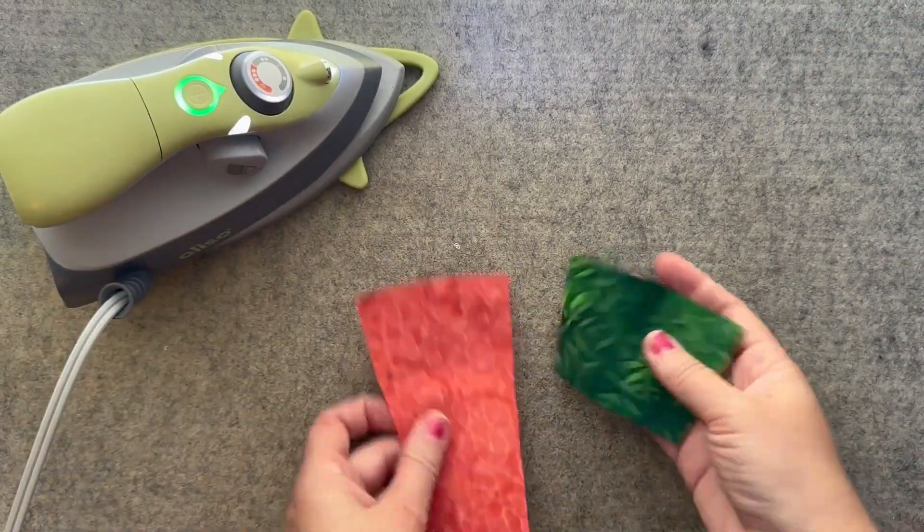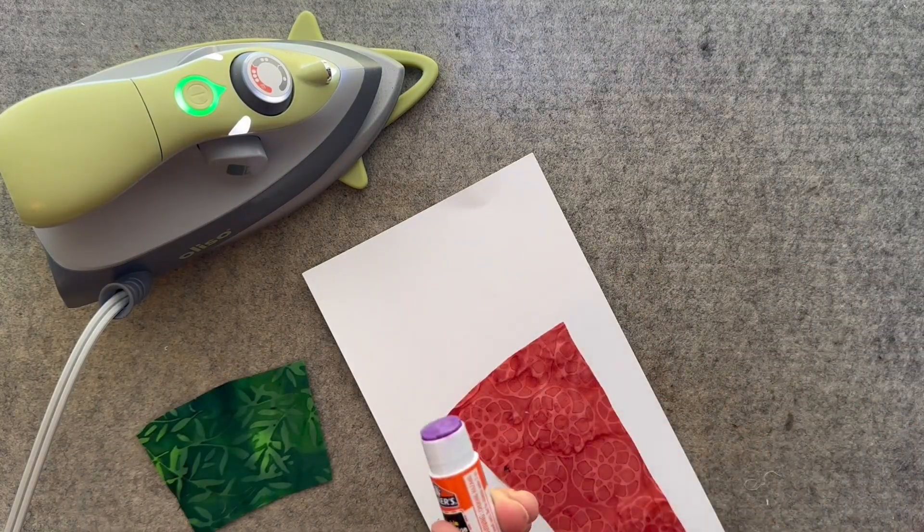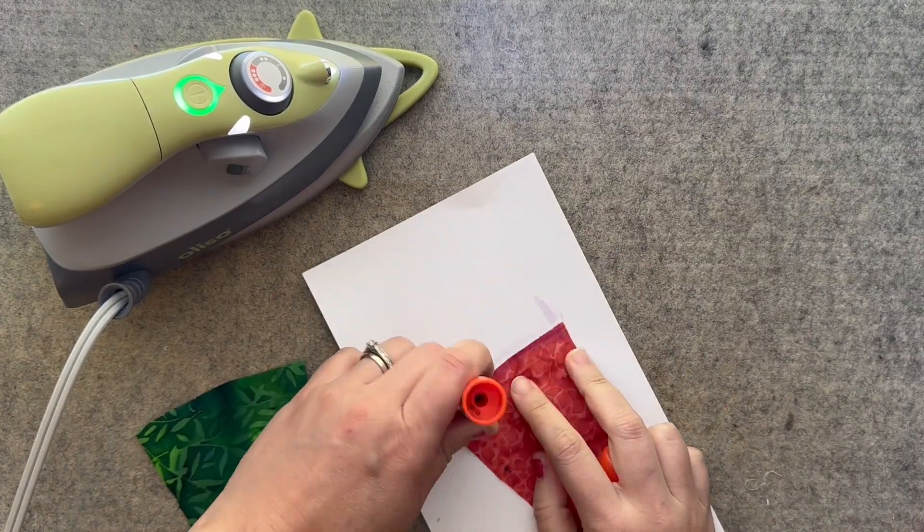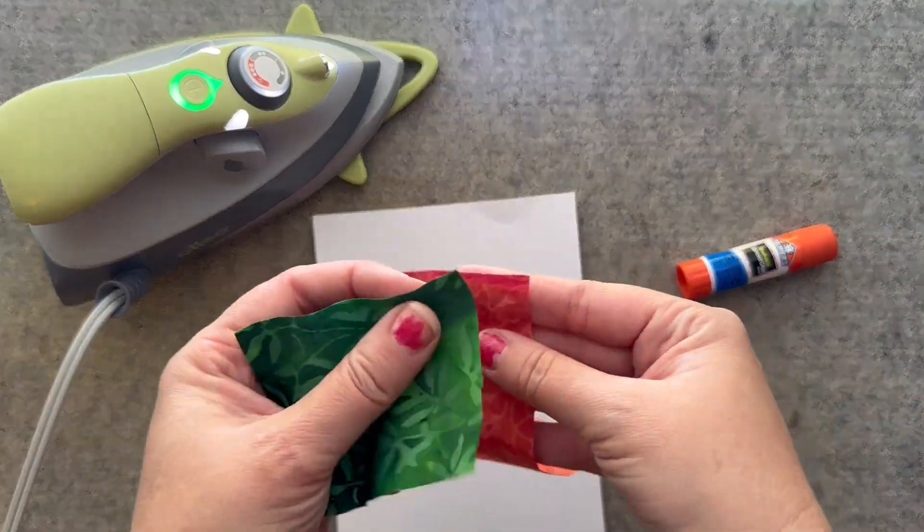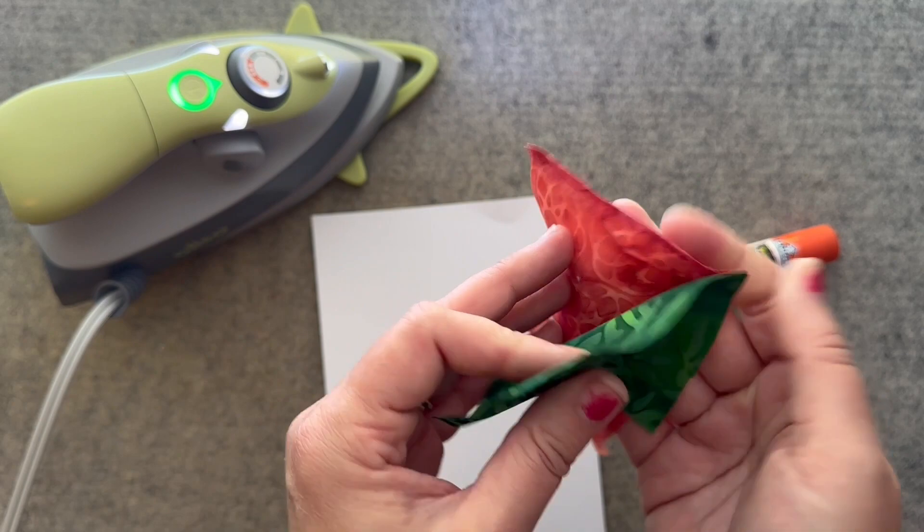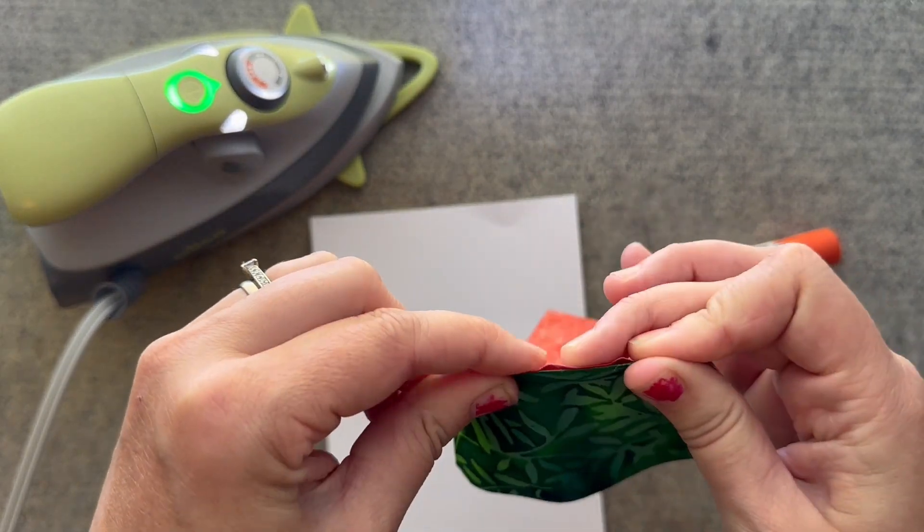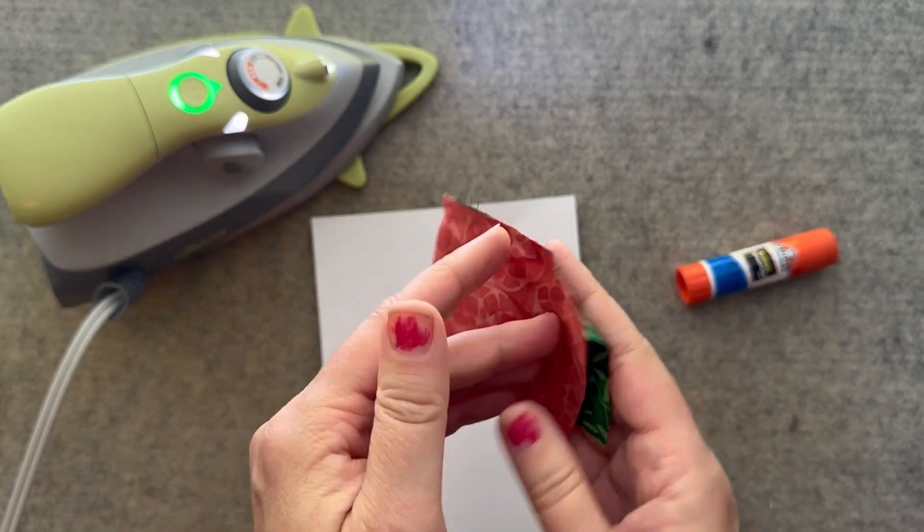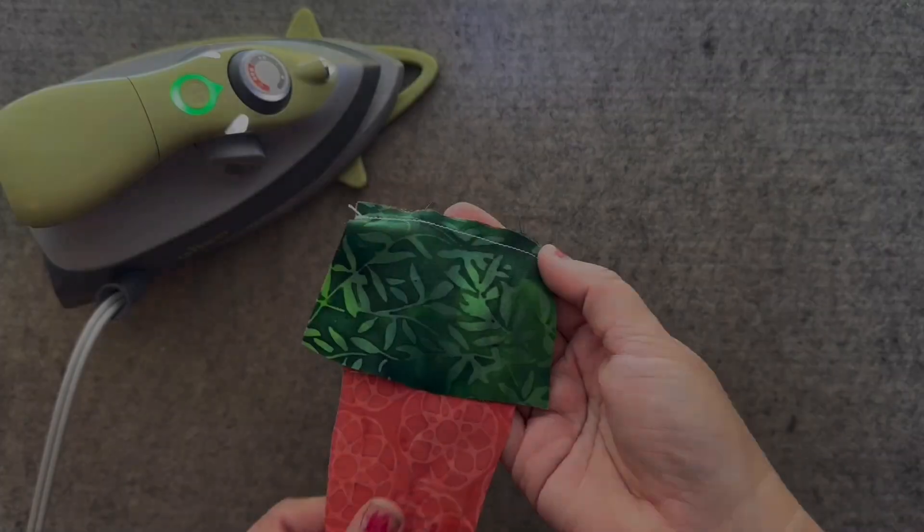Next we need to sew A and B together. To sew these you will be sewing on a curve, so I suggest basting the curves together. I like using the glue basting method. It's simple and there aren't a bunch of pins in the way. For additional video footage of the glue basting method there is a link in the description below.